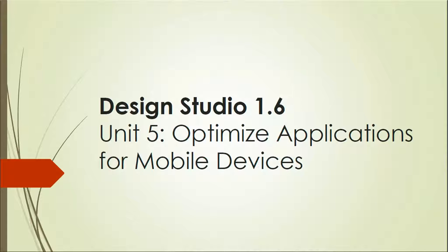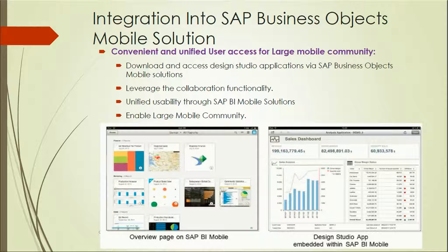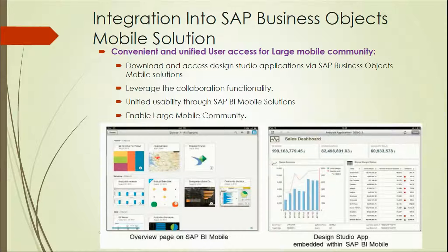Hello friends, in this video we will learn about optimizing applications for mobile devices in Design Studio 1.6. This is Unit 5, where we will see how we can access applications on mobile devices and how we can optimize applications for mobile devices. The first lesson is about accessing applications on mobile devices, which provides convenient and unified user access for the large mobile community, as users are now using mobile devices for accessing various applications.